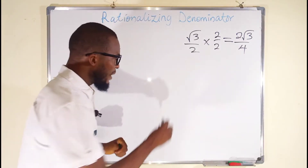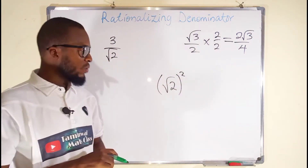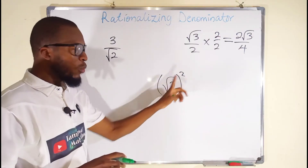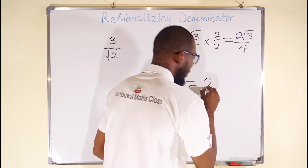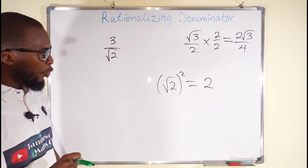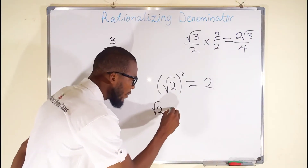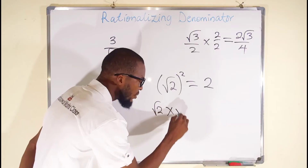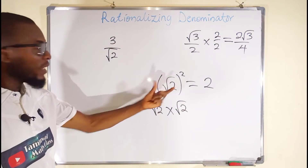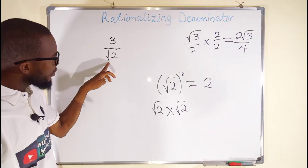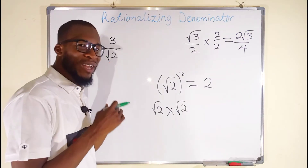We learned that if you square a square root, the square will always cancel the square root, leaving the rational number under the radical sign, which is 2. Root 2 squared can be expressed as root 2 multiplied by root 2, which is the same thing as root 2 squared. This means that if we multiply this root 2 by another root 2, it is going to be rationalized.